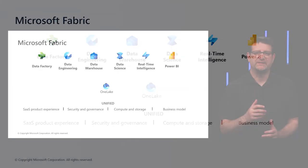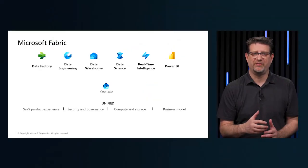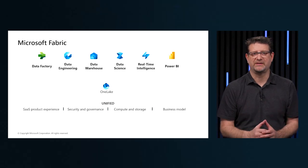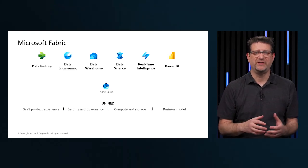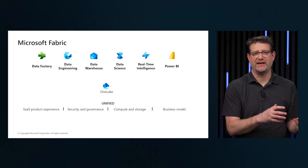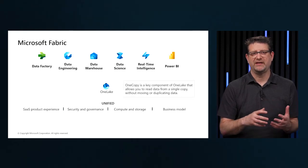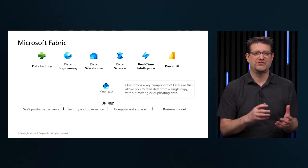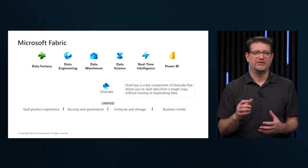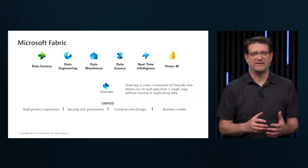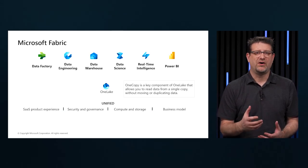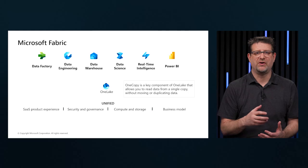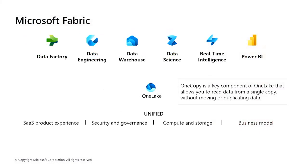OneLake architecture provides a single integrated environment for data professionals in the business to collaborate on data projects. Think of it like OneDrive for data — one that combines storage locations across different regions and clouds into a single logical lake without moving or duplicating data. Data can be stored in any file format in OneLake and can be structured or unstructured. For tabular data, the analytical engine in Fabric will write the data in Delta format. When writing to OneLake, all engines will know how to read this format and treat all the files as tables no matter which engine writes it.